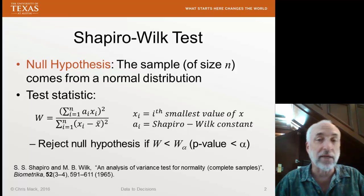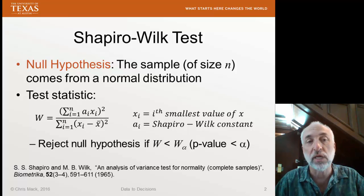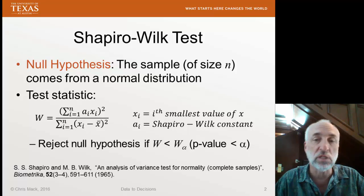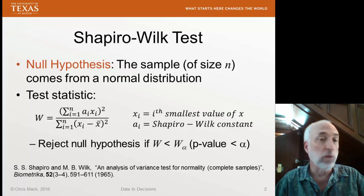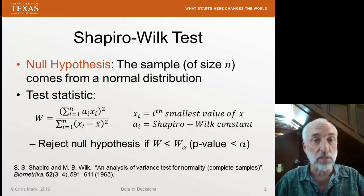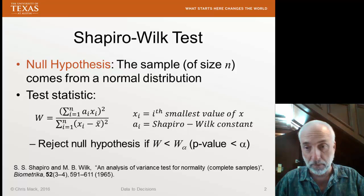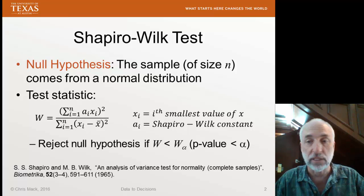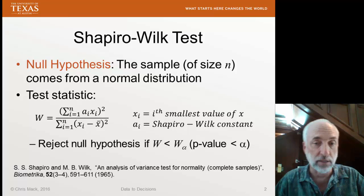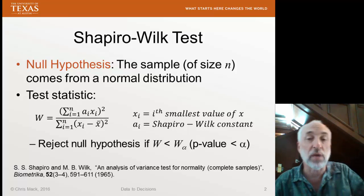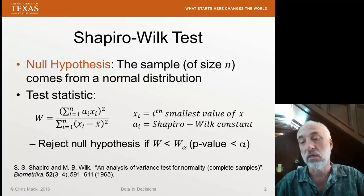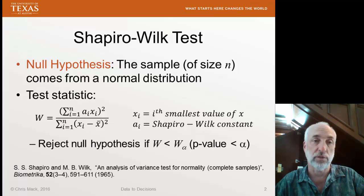Alternatively, we calculate the p-value for this particular value of W — what's the probability that we get a value of W this low, given the assumption of a normal distribution? Then we compare that p-value to alpha, and if it's less than alpha, we again reject the null hypothesis. The reference below shows us the paper where this statistic and test was worked out.